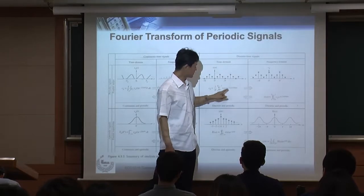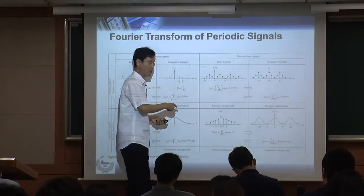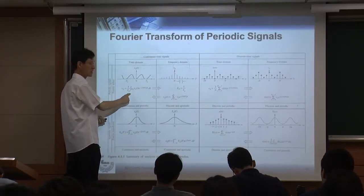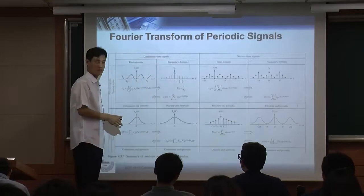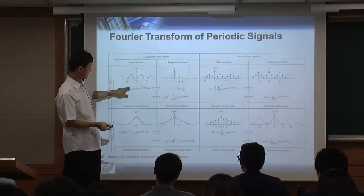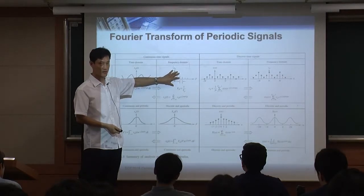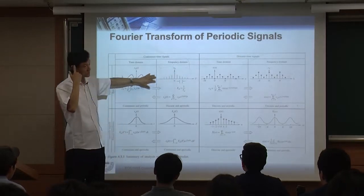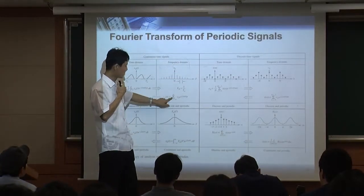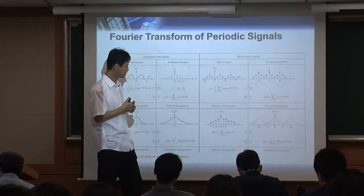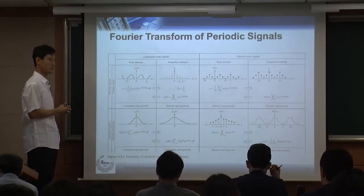The Fourier transform and inverse Fourier transform for discrete signals use summation (sigma) instead of integration, since you have discrete samples. Integration applies for continuous time; summation applies for discrete time. The frequency domain is discrete — represented by sigma not integration — because the time domain is periodic. Periodic in one domain means discrete in the other domain.